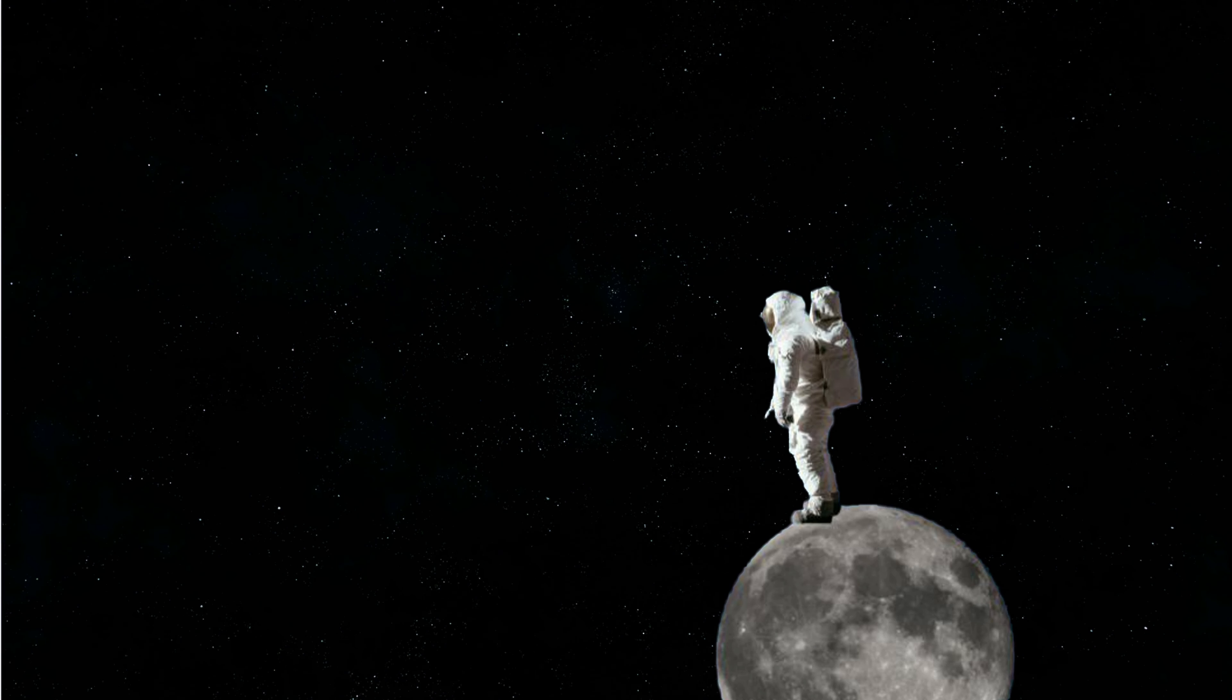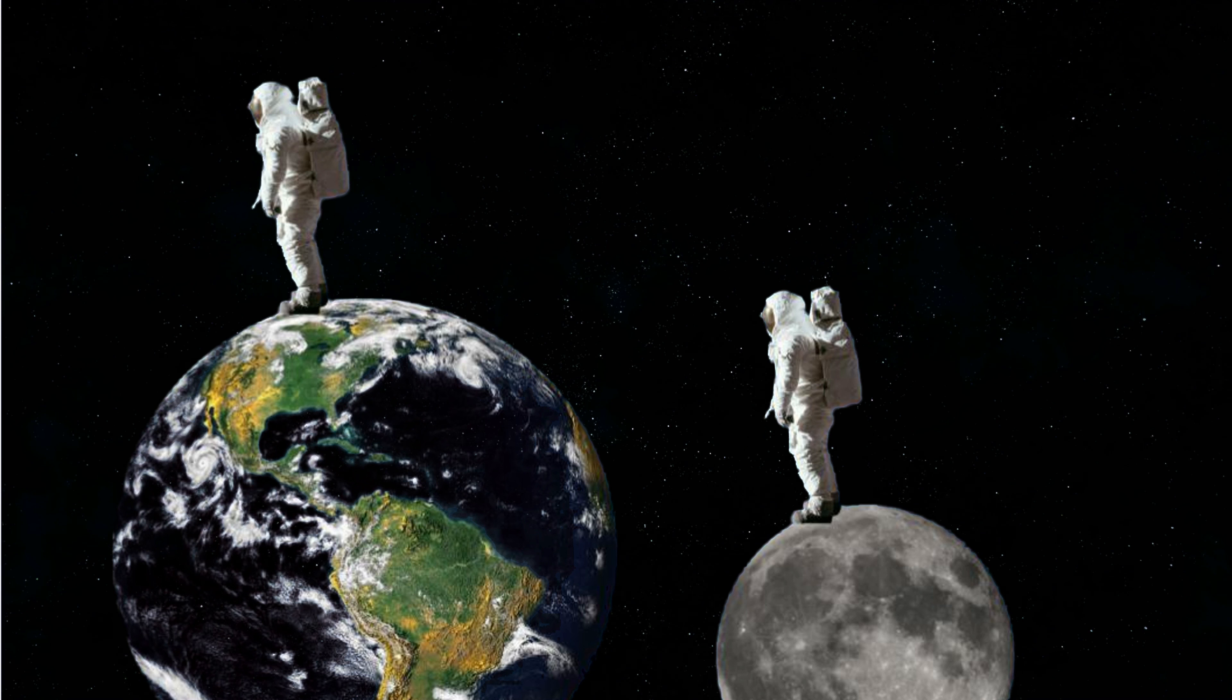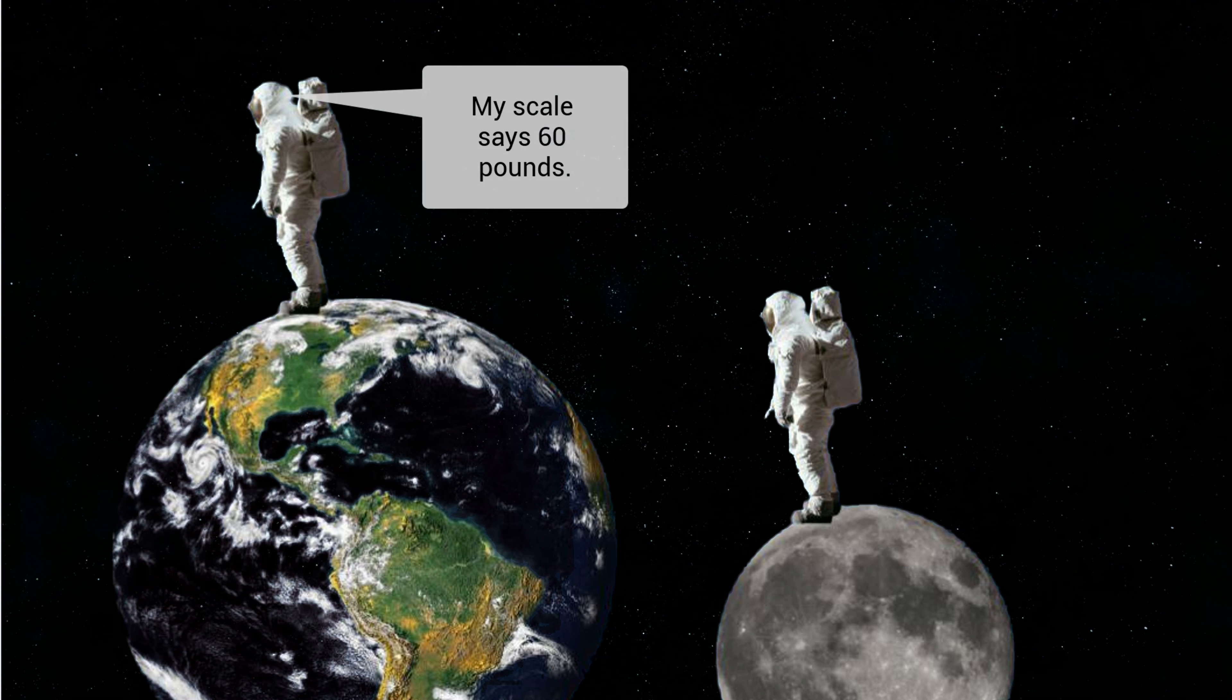Think about an astronaut who's standing on the moon. The astronaut stays on the surface of the moon because of the moon's gravity. If the astronaut stood on a scale on the moon, the astronaut's weight would be six times less than the weight of the same astronaut on a scale on earth. So a person who weighs, say, 60 pounds on earth would weigh only 10 pounds on the moon, about the weight of a bag of flour, because the moon has less mass than earth and its force of gravity is not as strong.